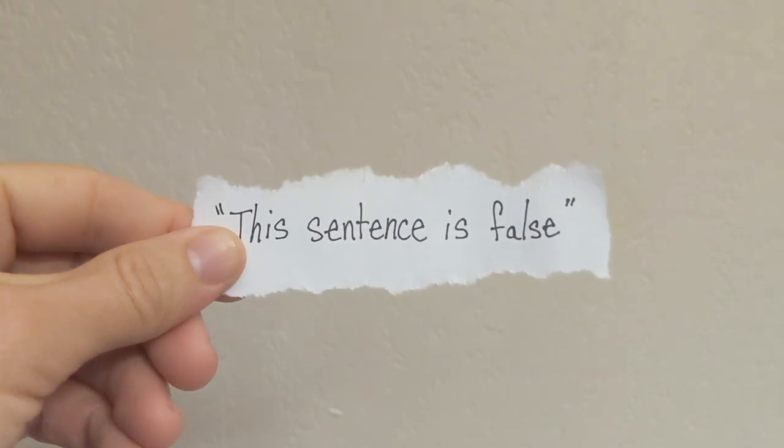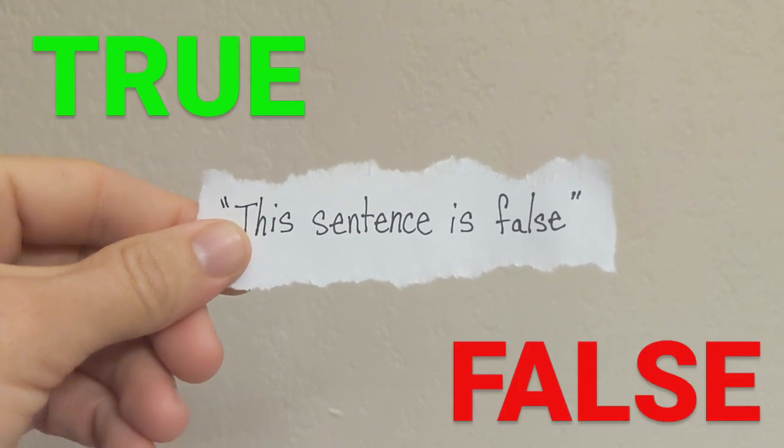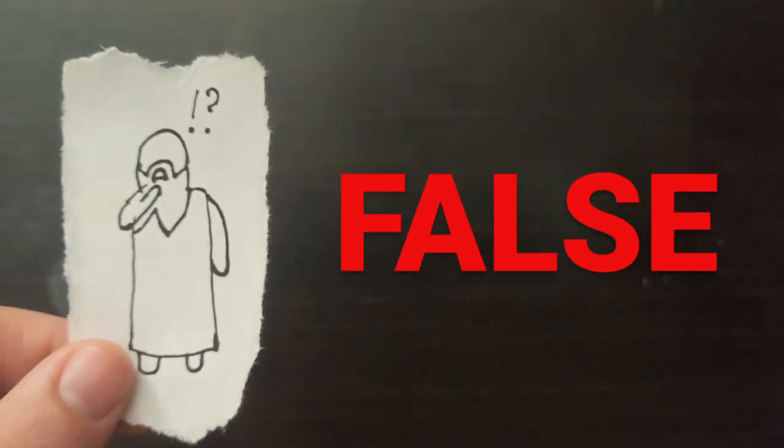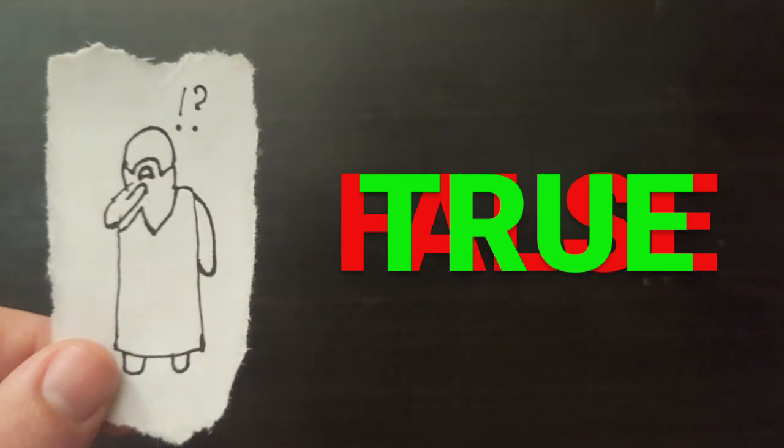This may seem a little inane at first. Is it true? Is it false? Big deal, it's a sentence. But look at this from a philosopher's perspective. Is it possible to make statements that are true and false at the same time? Or even, neither true nor false?